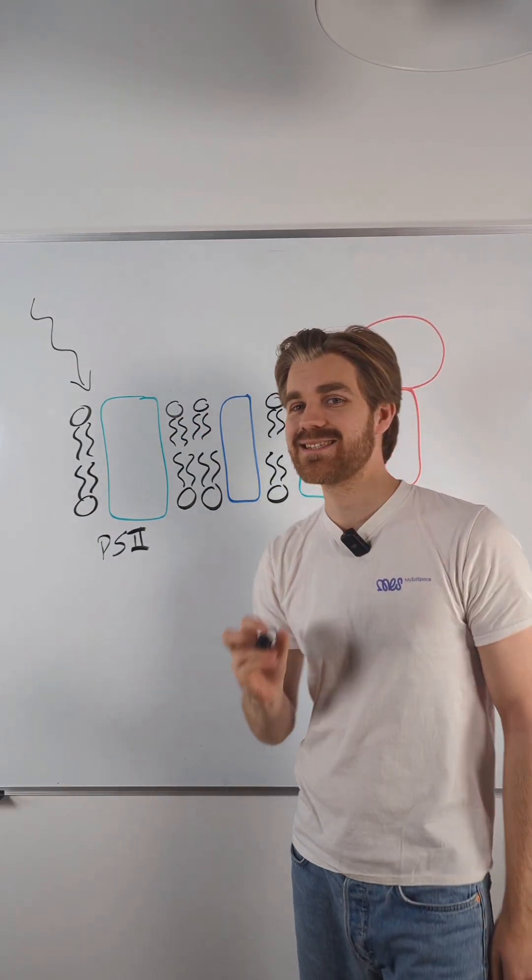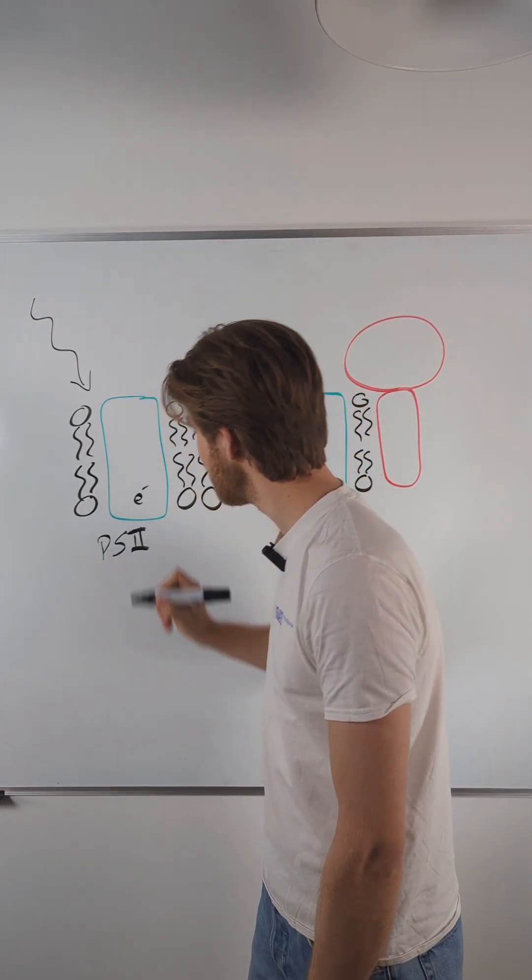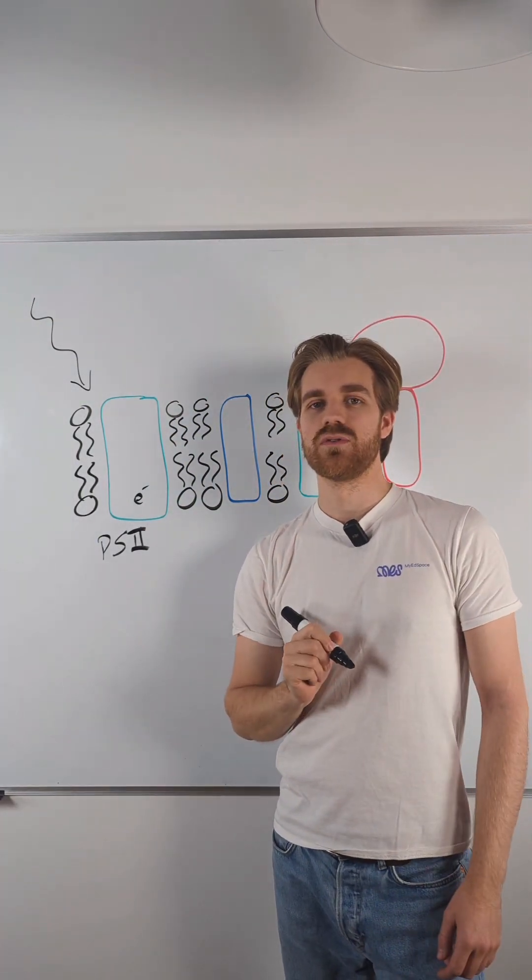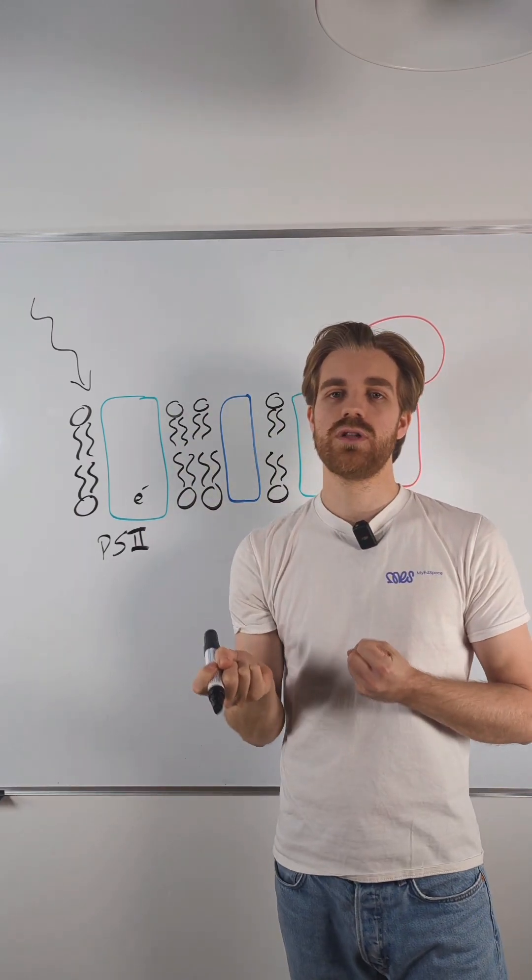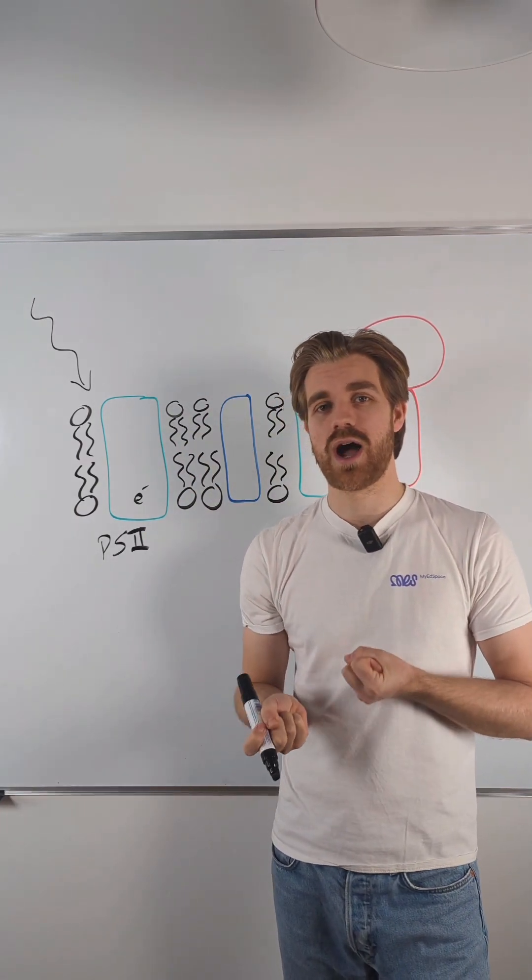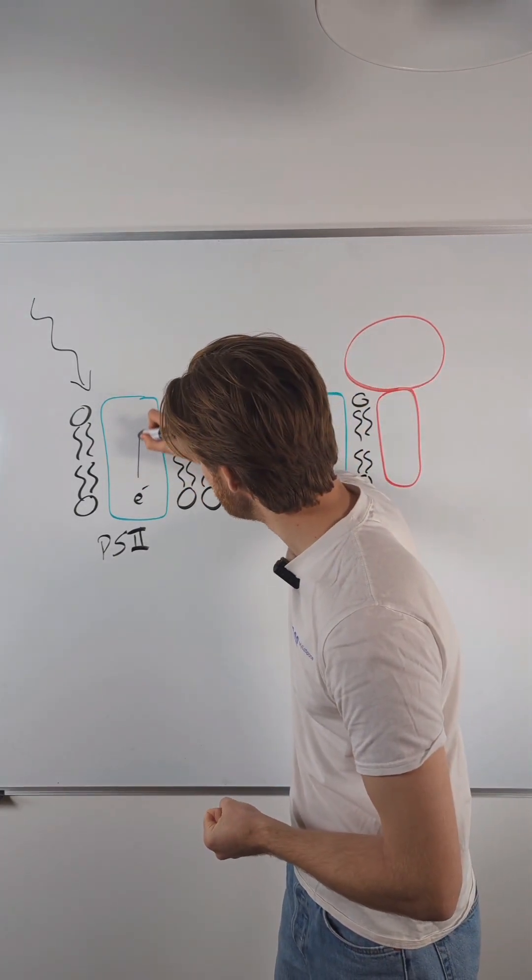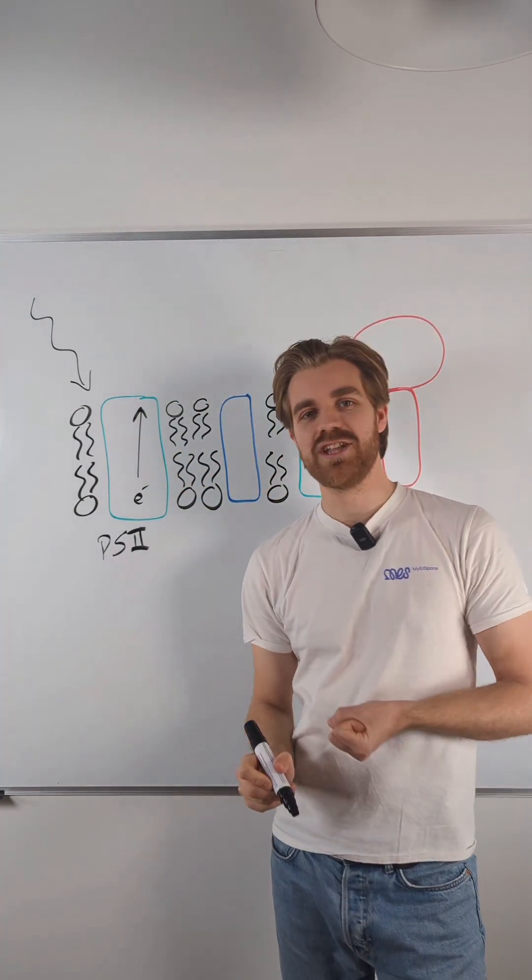What this does is excite an electron that is in the reaction center of photosystem II. This excited electron leaves the chlorophyll molecule and that is our process of photoionization. That electron is excited to a higher energy level.